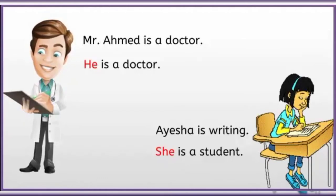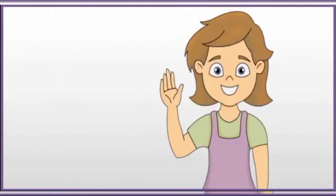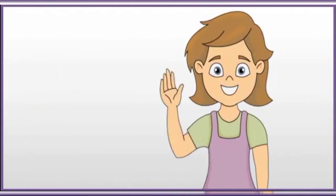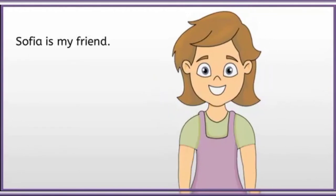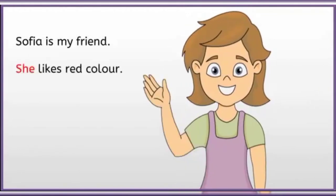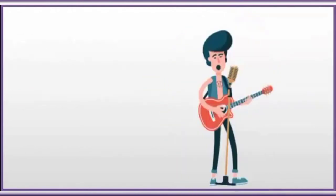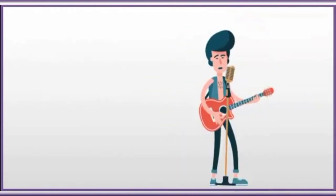So whenever we have to write he or she, we need to look at the picture or read the name. Now meet my friend — do you want to meet her? Sophia is my friend. We can see that Sophia is a female, so we can write she for Sophia. She likes red color. She is a nice girl.